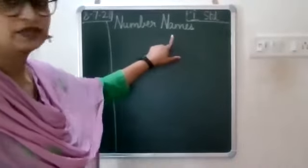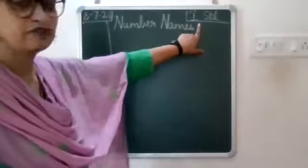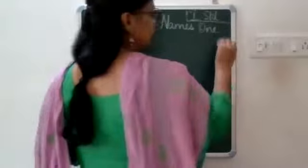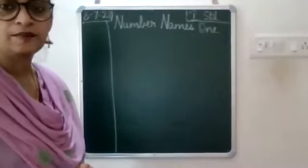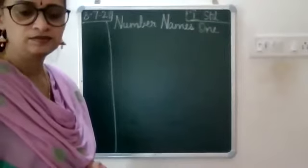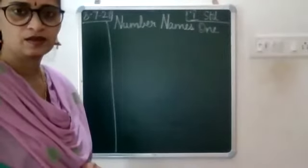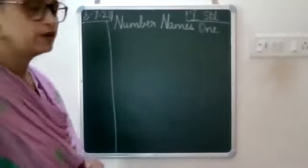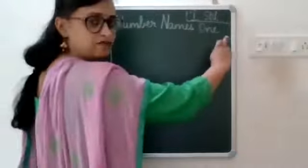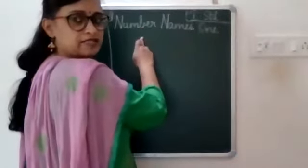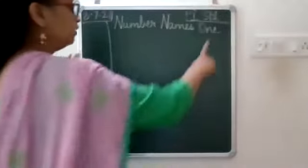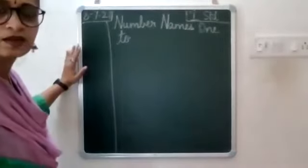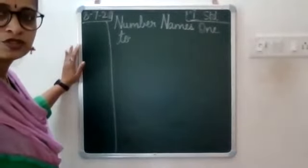Number Names — leave one finger space, write capital O-N-E. Leave one finger space, write T-O, 2. I do not have space here so I'm writing in the next line; I want you all to continue in the same line.